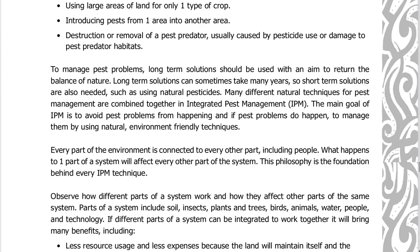To manage pest problems, long-term solutions should be used with an aim to return the balance of nature. Long-term solutions can sometimes take many years, so short-term solutions are also needed, such as using natural pesticides. Many different natural techniques for pest management are combined together in Integrated Pest Management, IPM. The main goal of IPM is to avoid pest problems from happening, and if pest problems do happen, to manage them by using natural, environment-friendly techniques.